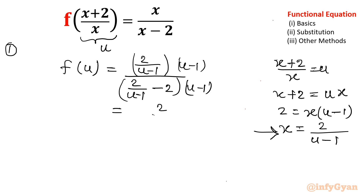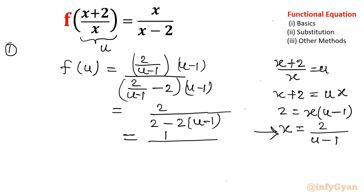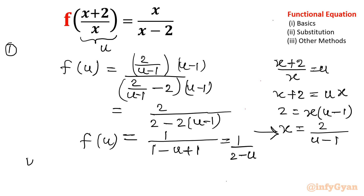Taking LCM, that gives us 2 over 2 minus 2 times u minus 1. You can see u minus 1 cancels out, giving minus 2 times u minus 1 in the denominator. Now 2 appears everywhere — divide numerator and denominator by 2 — so the equation converts to 1 over 2 minus u. That gives us f of u equals 1 over 2 minus u.